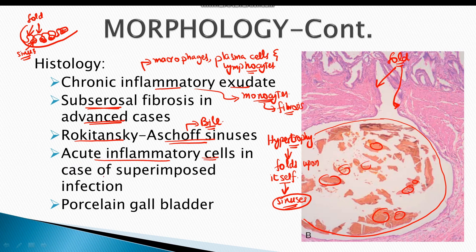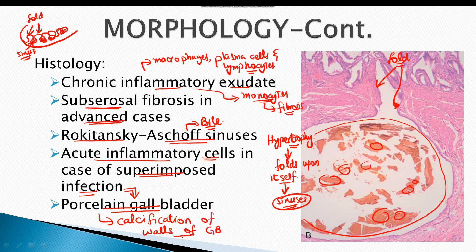In certain cases of chronic cholecystitis, acute inflammatory cells such as neutrophils are present in case of a superimposed infection. Chronic cholecystitis might also progress into a severe condition known as porcelain gallbladder, which refers to calcification of the walls of the gallbladder. In this case, the gallbladder is converted into a solid, calcified structure known as porcelain gallbladder.